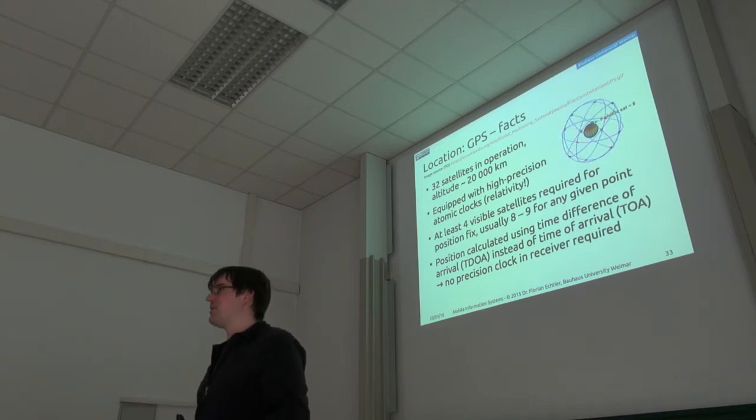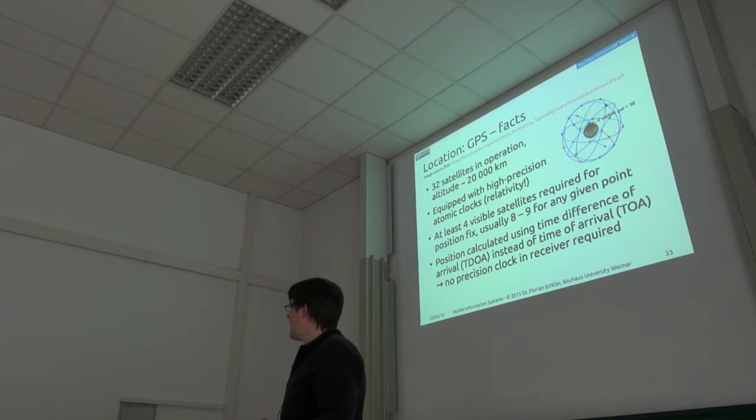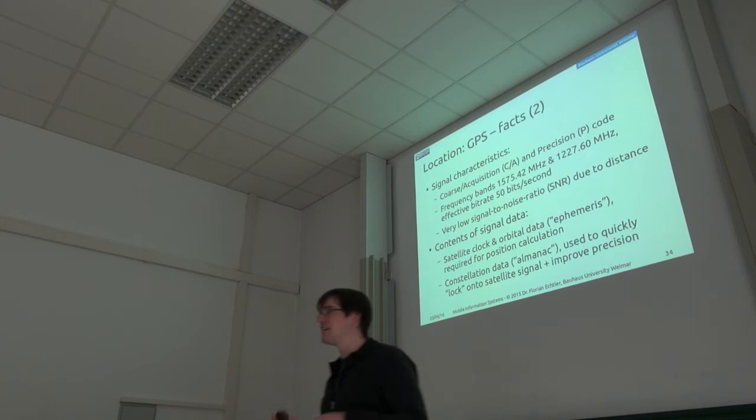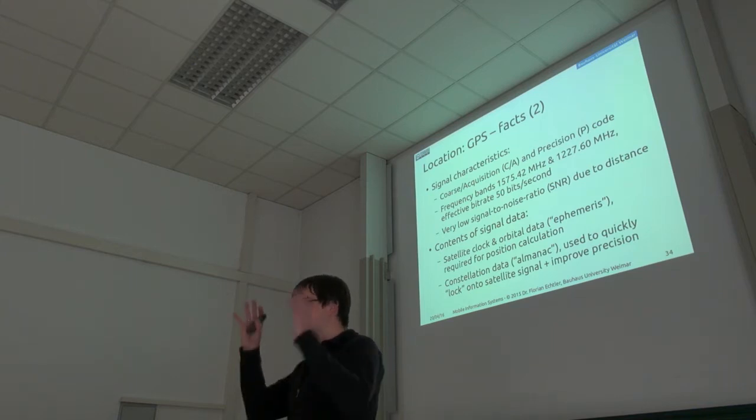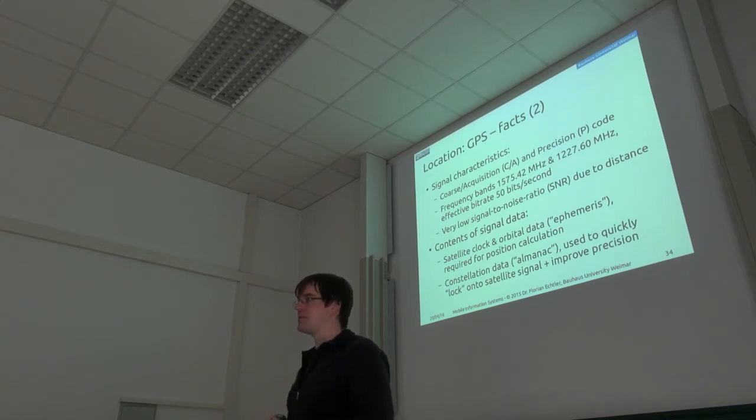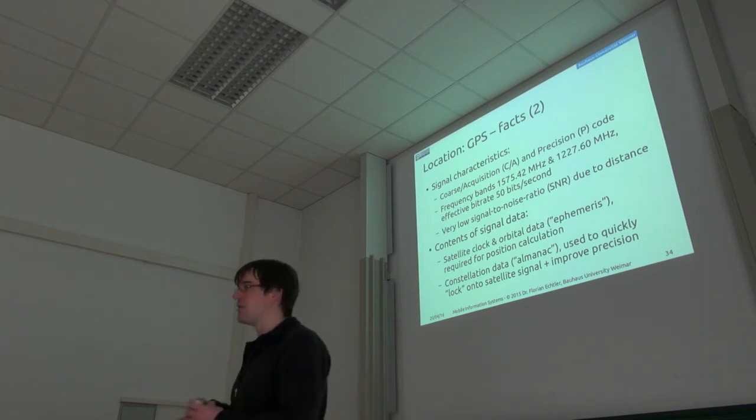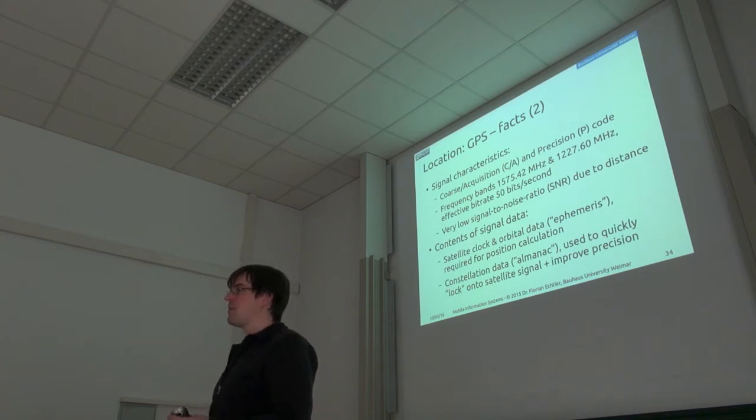There is one aspect which you can use to improve the connection using an internet connection. So the signal which is sent from the satellites also contains information about what other satellites are currently in view, and so what frequencies, for example, you should listen to. And this kind of data you can also get from the internet, and this makes the time until you actually get the position fixed much quicker.